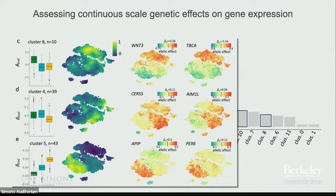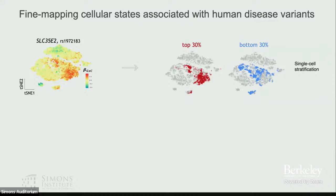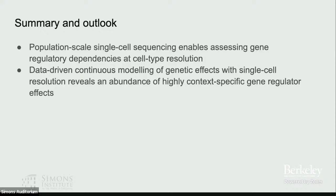As a tentative early observation, this also matters for disease variants. Looking at co-localization with GWAS hits for insomnia and sleeplessness, you only find overlaps with eQTL associations when looking at the specific subpopulation identified by our model-based approach. This really matters for interpreting disease variants going forward.